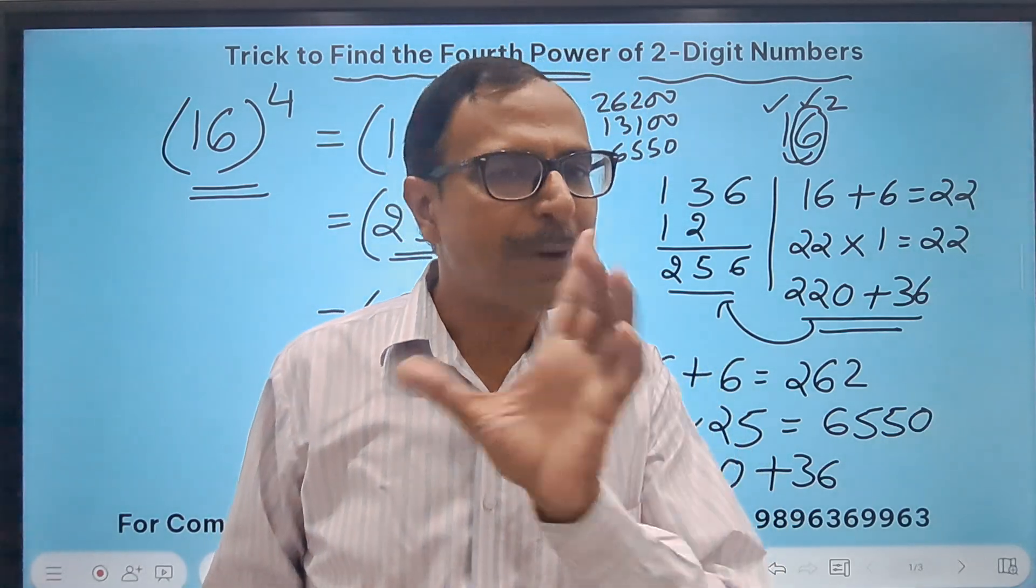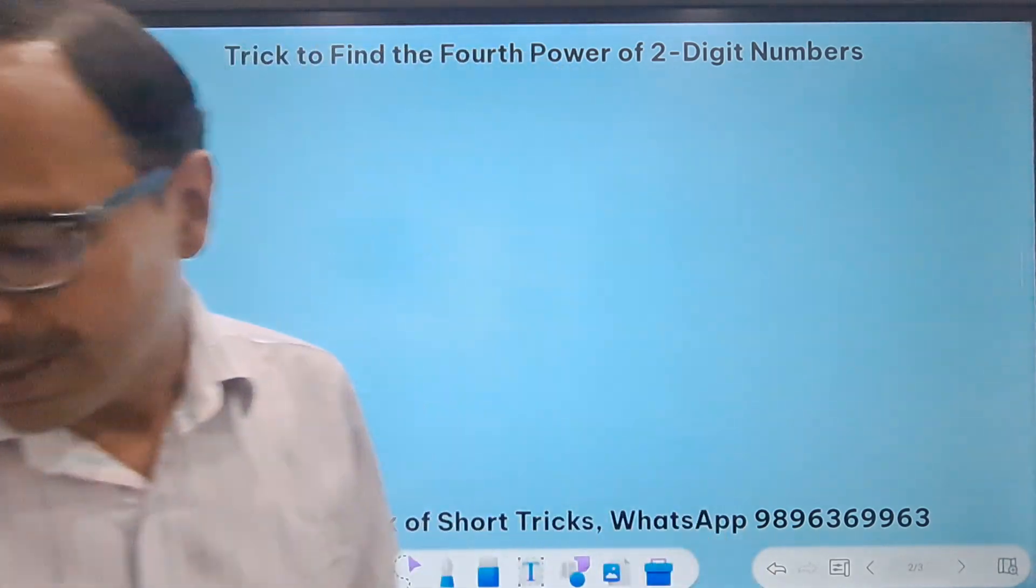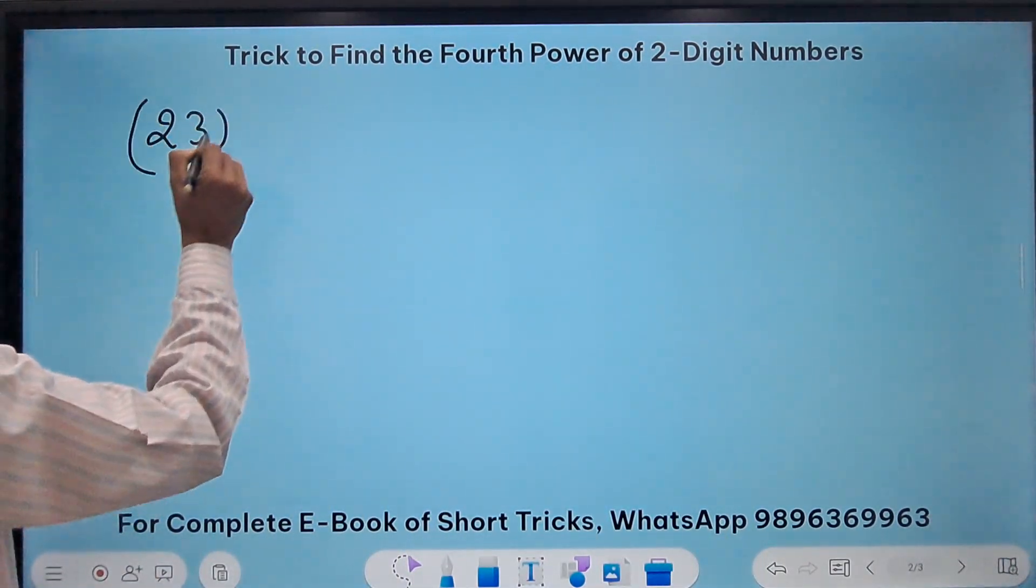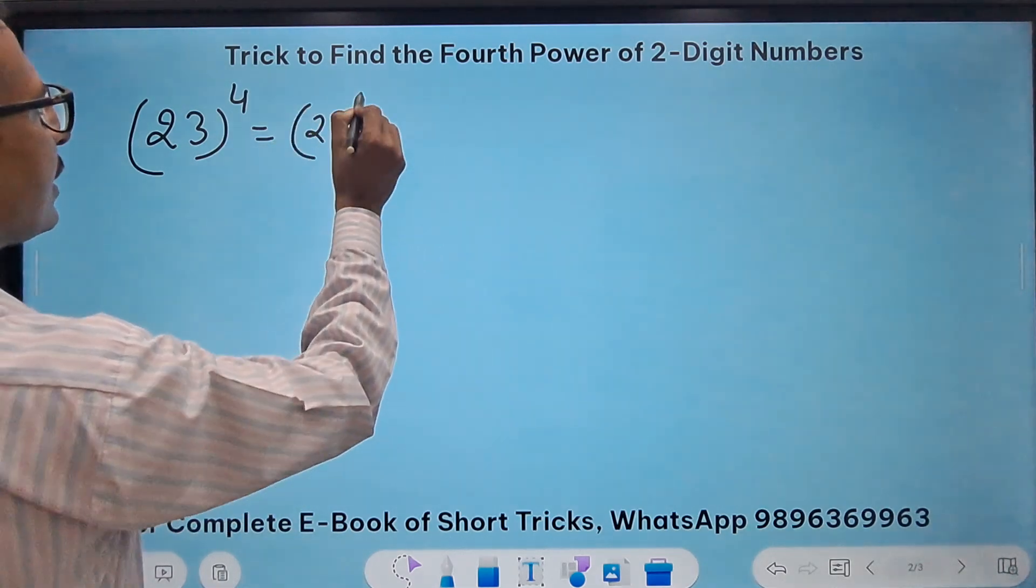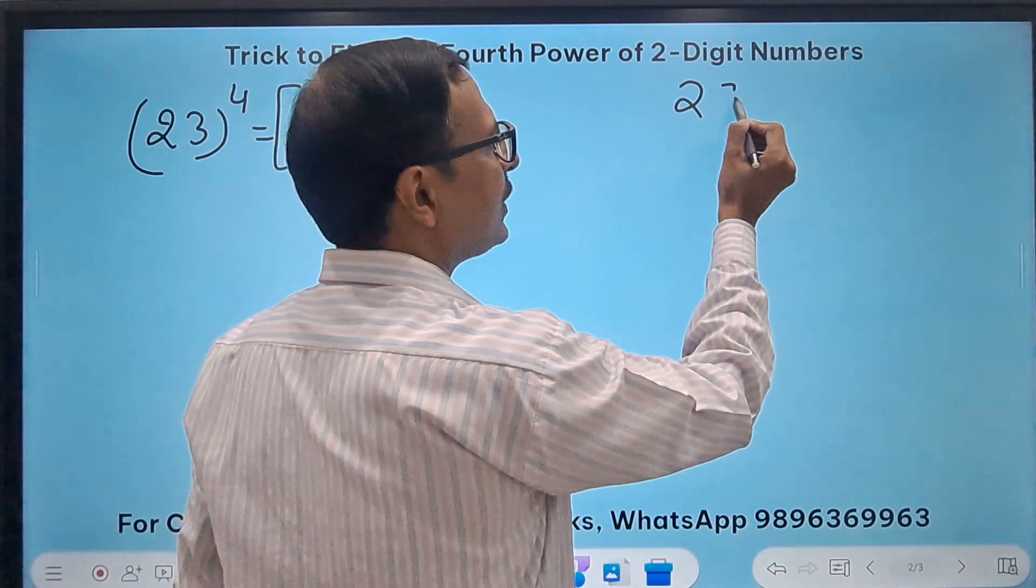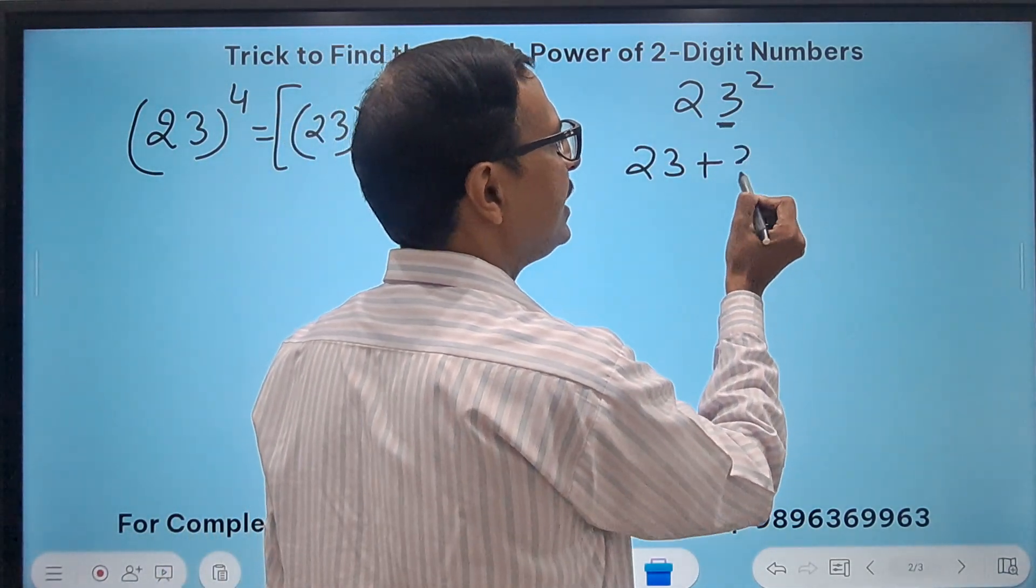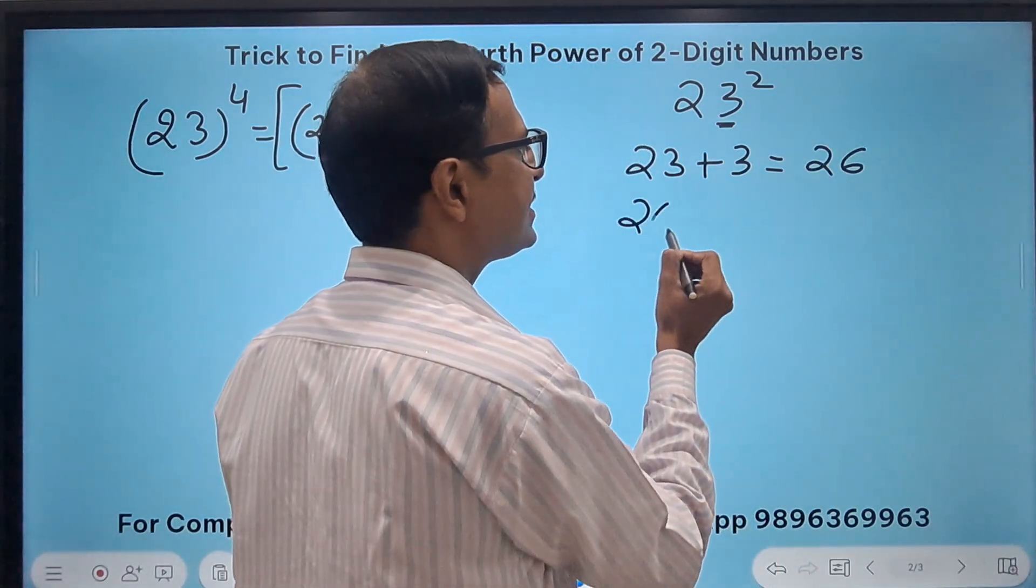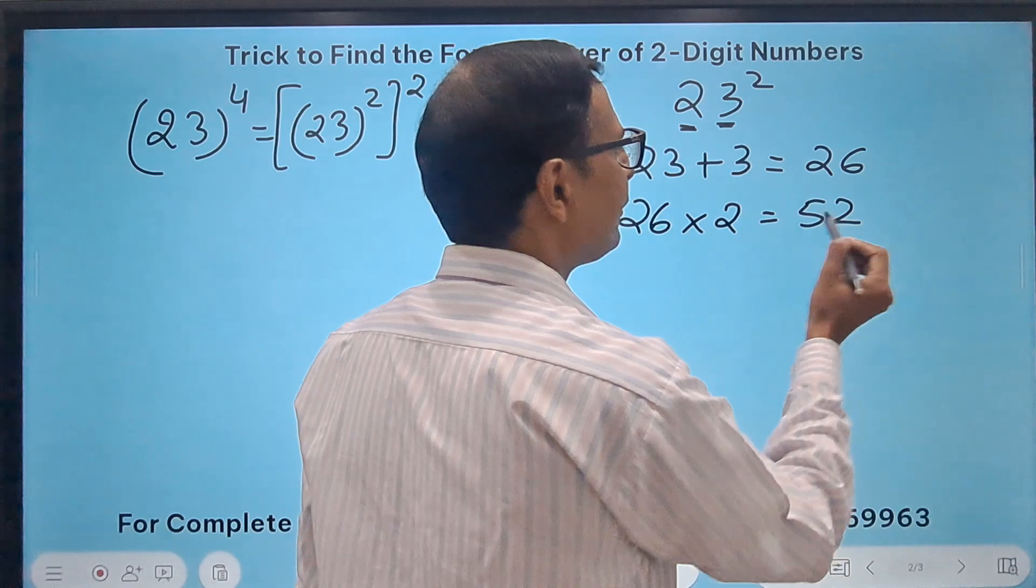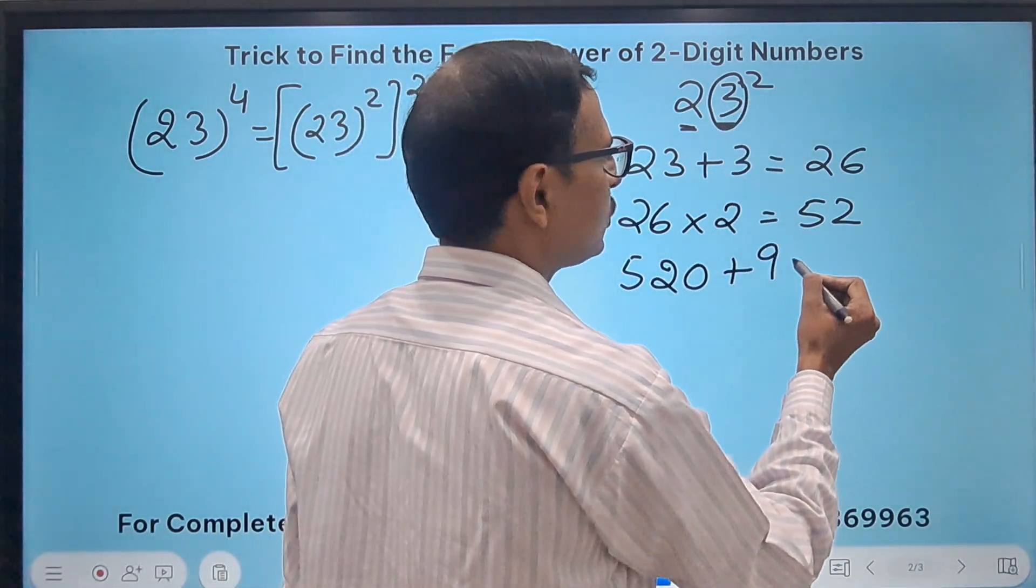So you got to practice everything. Let's take one more example. You will feel more comfortable. So I'll take 23 raised to power 4. For that I know that this is 23 square and then I have to take the square again. So for squaring 23, I will do 23 plus the unit digit 3, that gives me 26, and then 26 multiplied by the first digit 2, that gives me 52.